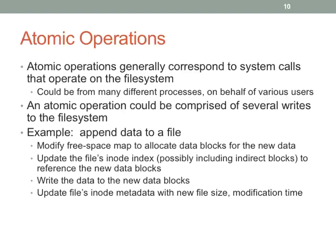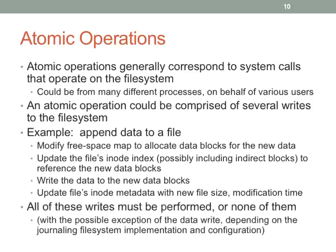An atomic operation is comprised of several writes to the file system. For appending, for example: modify the free space map, allocate new data blocks, update the inode index (possibly including indirect blocks), write the data into the new data blocks, and update the file's inode metadata with the new file size and modification time. We want to make sure all of these things occur or none of them occur.